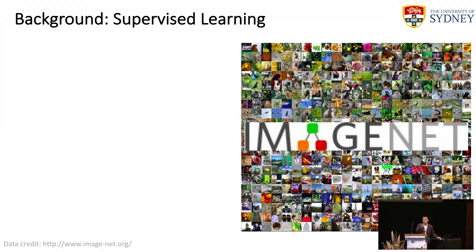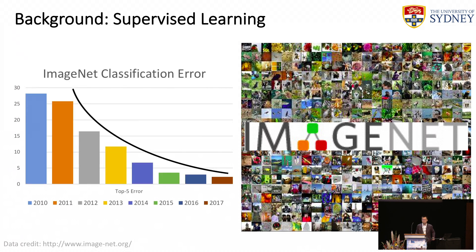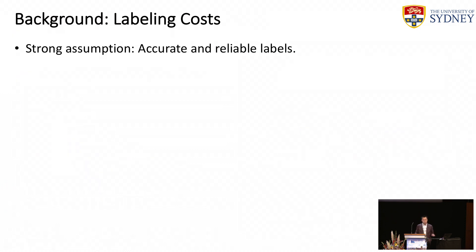We all know deep supervised learning has achieved great success. For example, in ImageNet classification, deep neural networks have achieved better performance than human beings. But the success of deep supervised learning is based on a very strong assumption — that all data are accurately and reliably labeled.